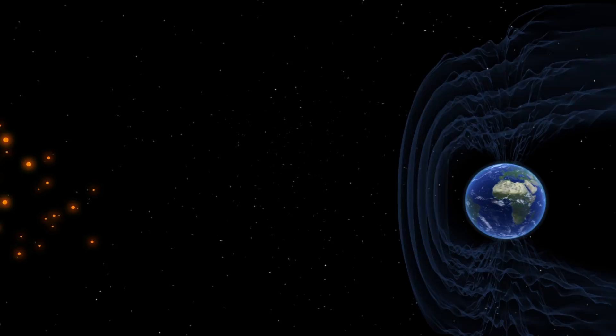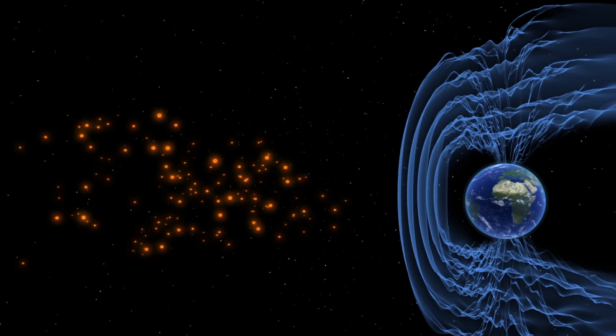The Earth is surrounded by a magnetic field that shields the planet's surface from charged particles constantly being emitted by the Sun.